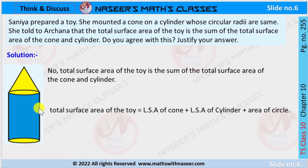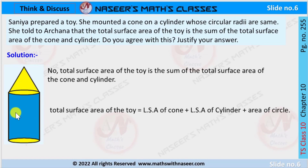This is the toy made by Sanya — a cone is mounted on a cylinder. The total surface area of this toy consists of the lateral surface area of the cone, the lateral surface area of the cylinder, and the area of the circle at the bottom.